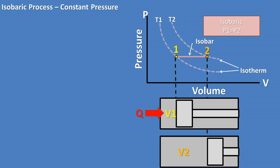Notice on the graph of the isobaric process that we have a pink line labeled isobar. This pink line represents the isobaric process. All variations of piston movement and changes of volume and temperature are captured between point one and point two on this line. Notice that the pressure does not change during the process.